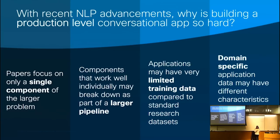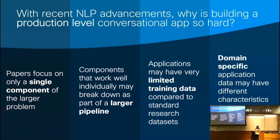It comes down to a few things. Many published papers focus on just a single component of a larger problem — just reading comprehension or just question answering — and don't tell you how to string together all these components to create a full conversational app. As you string together different components, you get a compounding error effect. Additionally, many papers are evaluated on standardized datasets that may be very large, and the state-of-the-art models that work well on large training data sizes may not work well on your smaller, noisier real-world datasets.